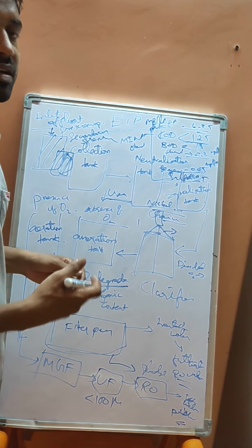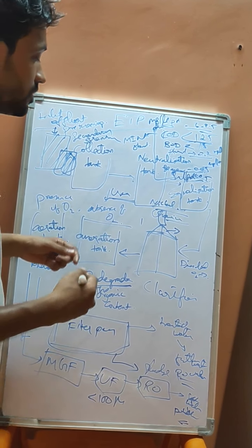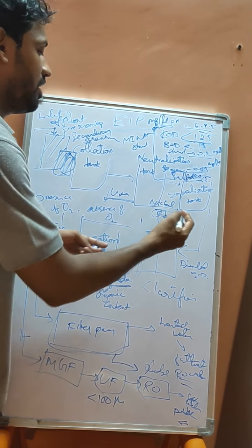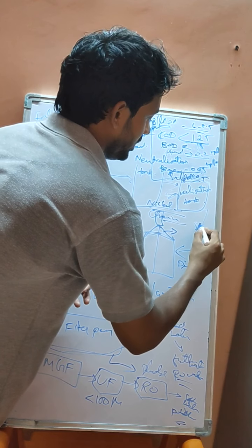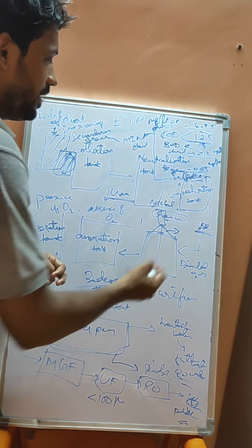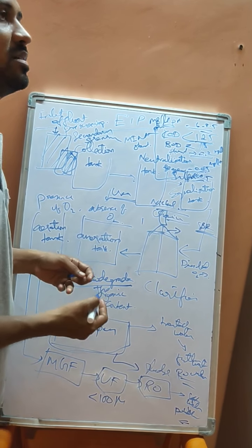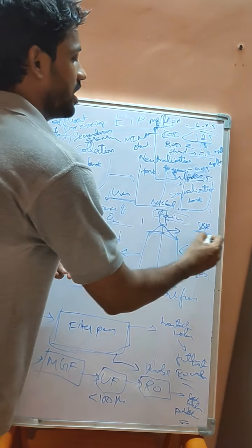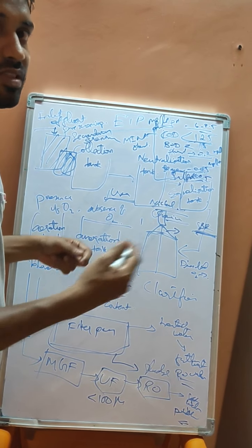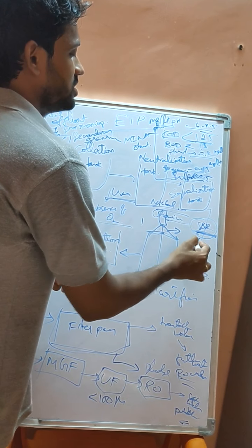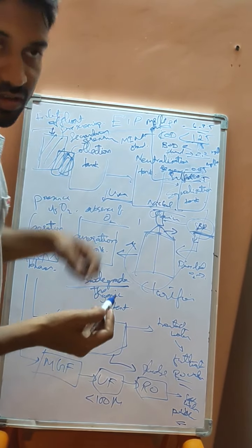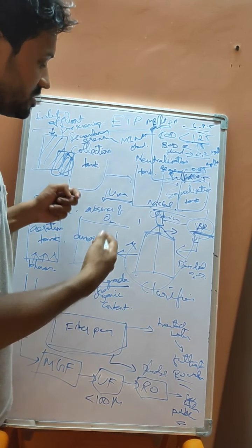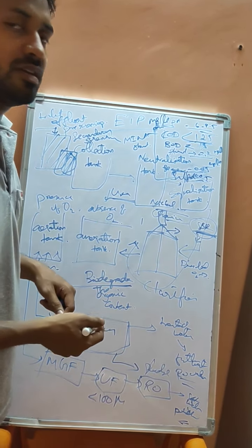For gas-based plants where the effluent contains significant gas, a sequence batch reactor (SBR) is added after the clarifier. In such cases, methane gas may be produced due to the reactions from chemical additions and organic content. Apart from this addition, all other process steps remain the same. If anything has been missed, viewers are encouraged to add it in the comments.